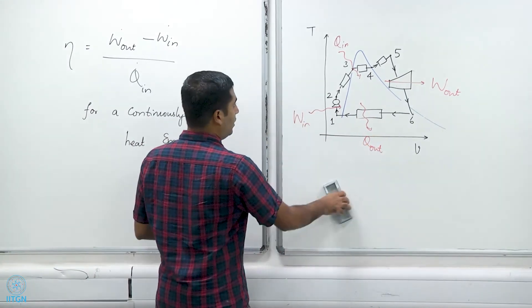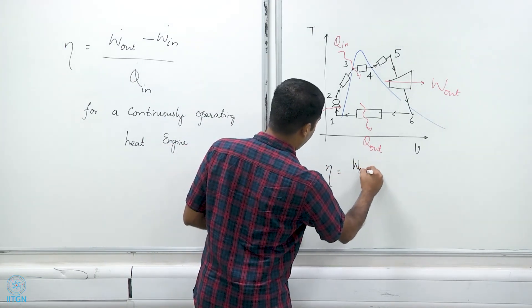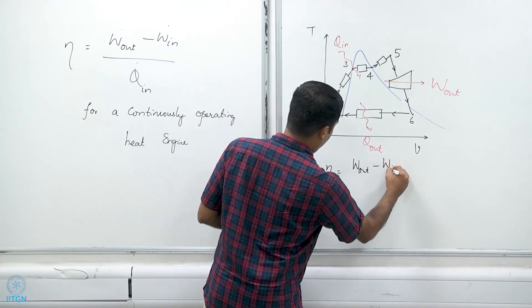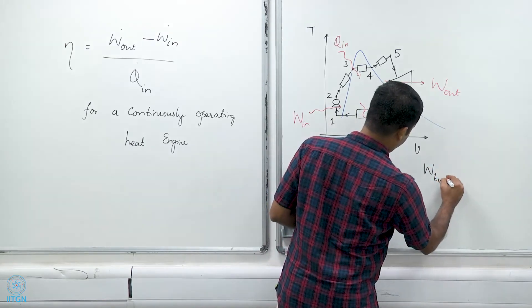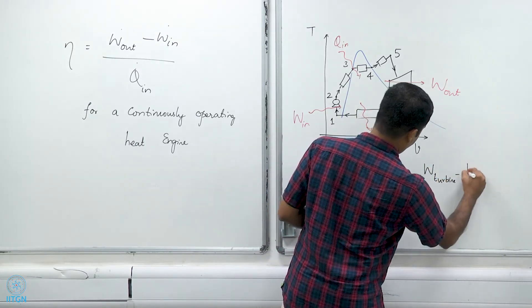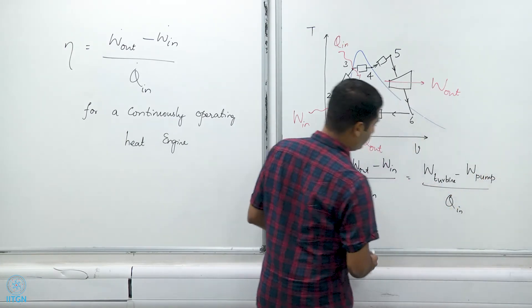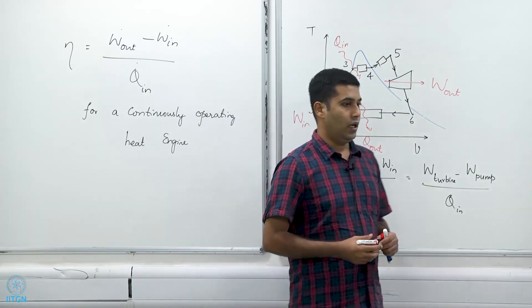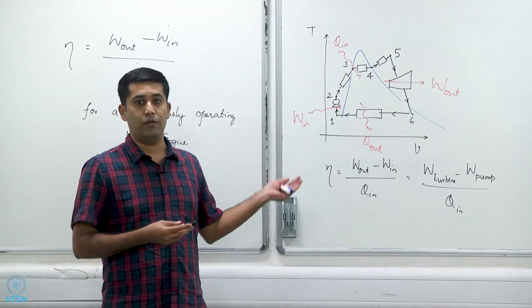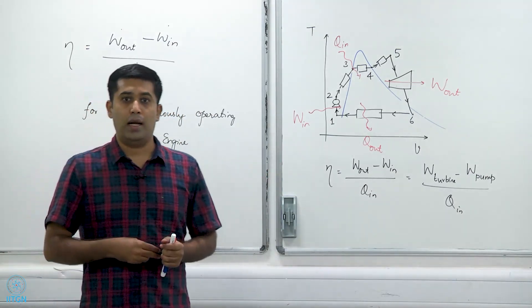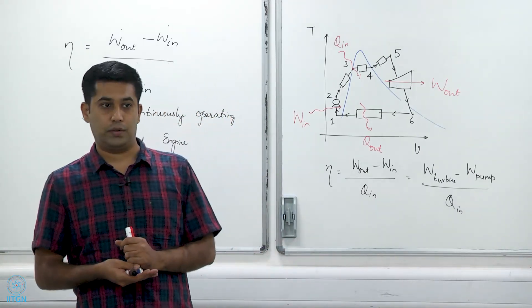Therefore I can write the thermal efficiency of this heat engine as η = (W_out - W_in) / Q_in, that is also equal to (W_turbine - W_pump) / Q_in. I know there are lots of questions going on in your mind as to what we can do alternatively and why we do it in this particular fashion, and I would like to discuss that in class and I hope that will be a very good discussion.